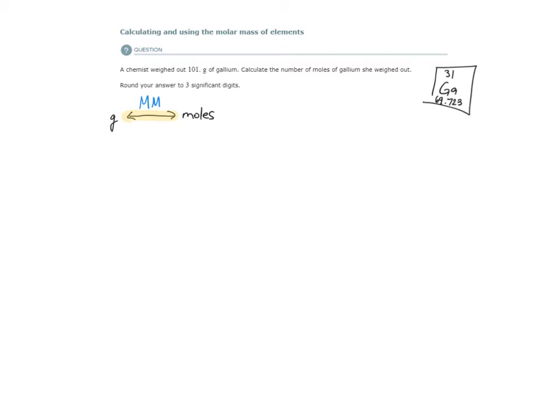Look at the units of molar mass. The units of molar mass for gallium, for example, the molar mass of gallium is 69.723, and the units are grams per mole.